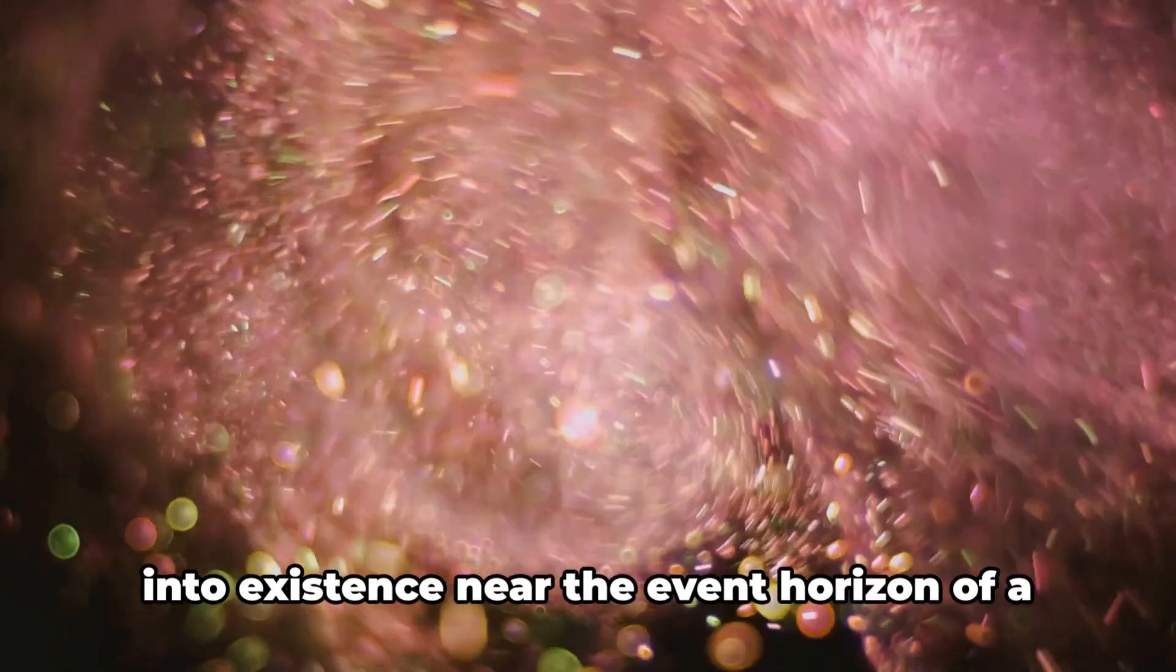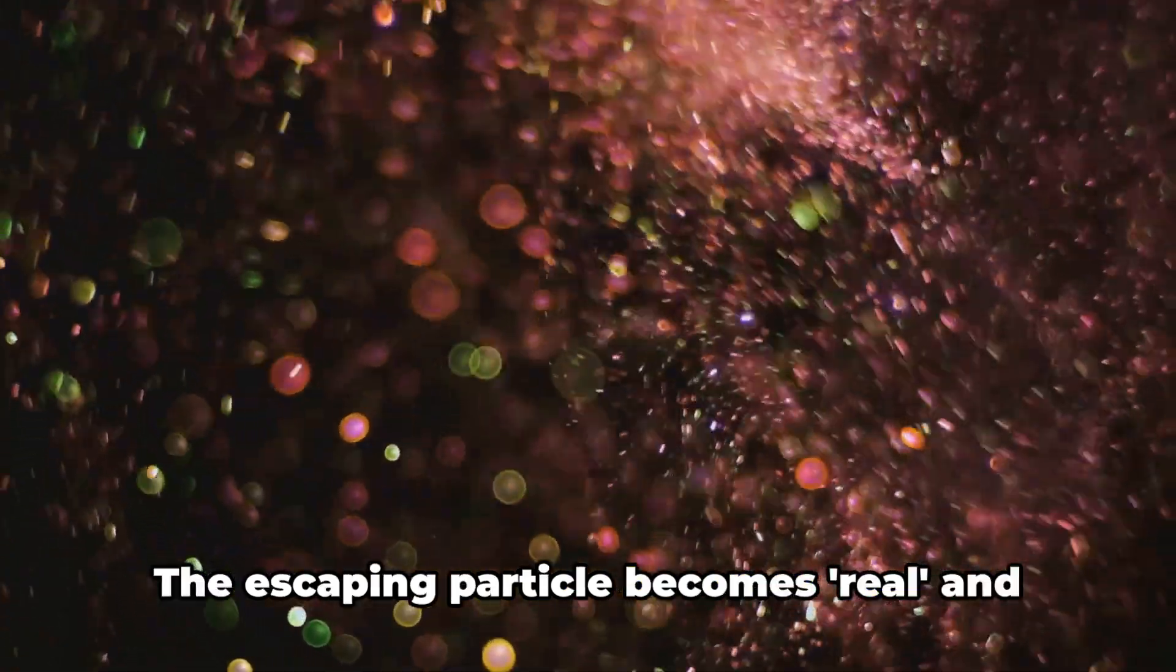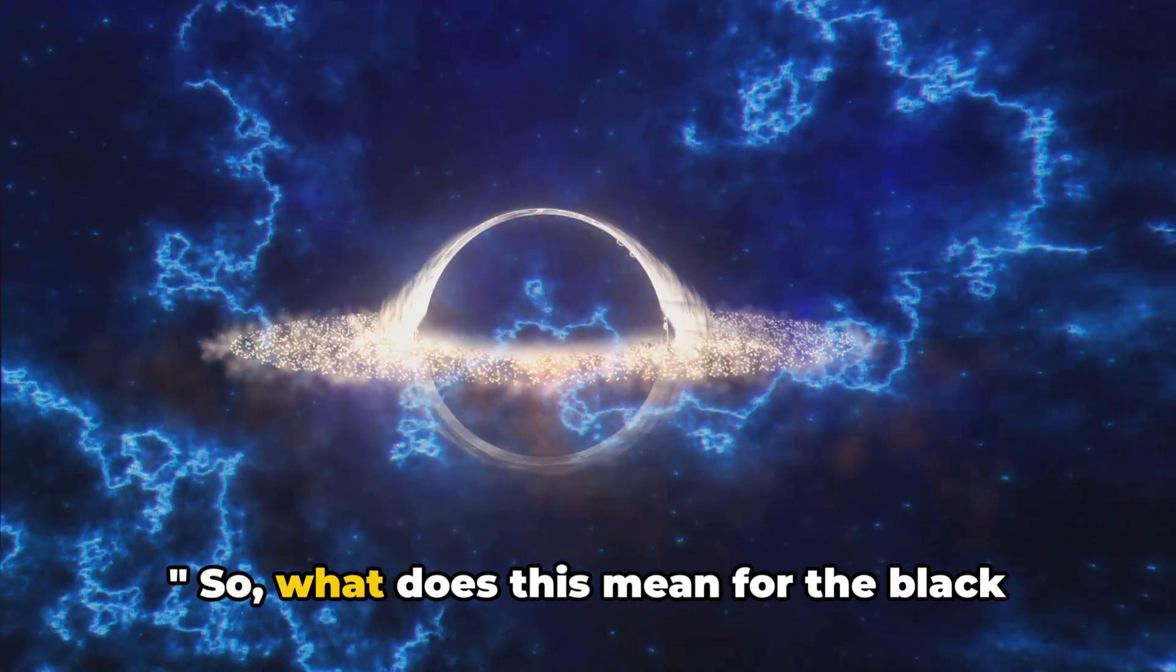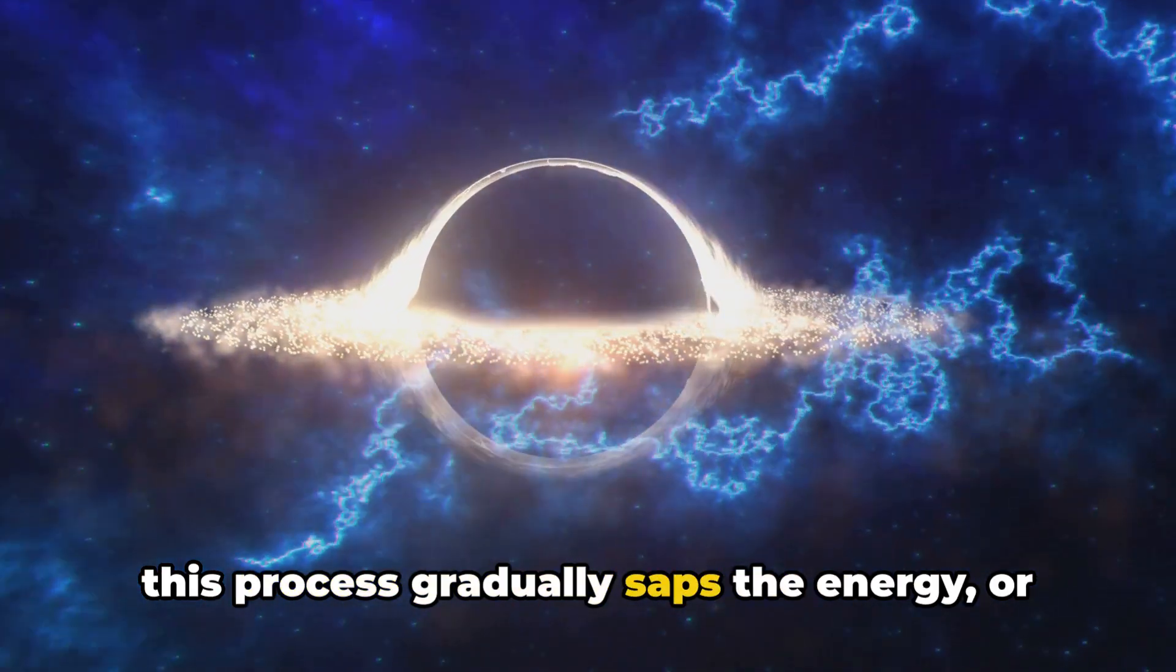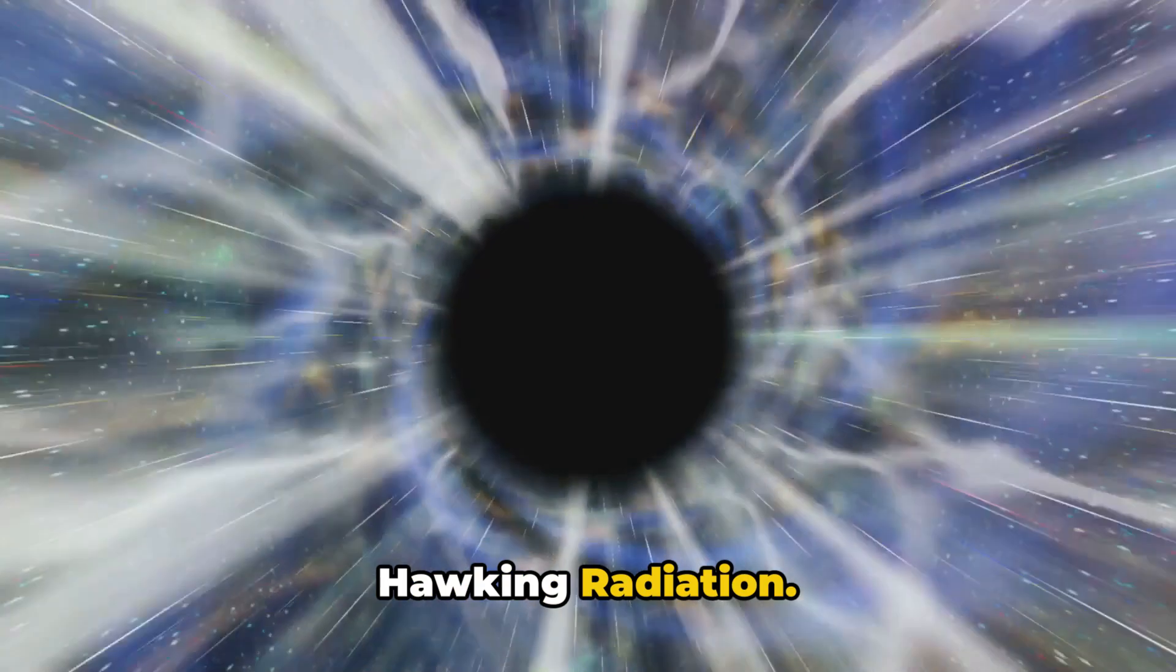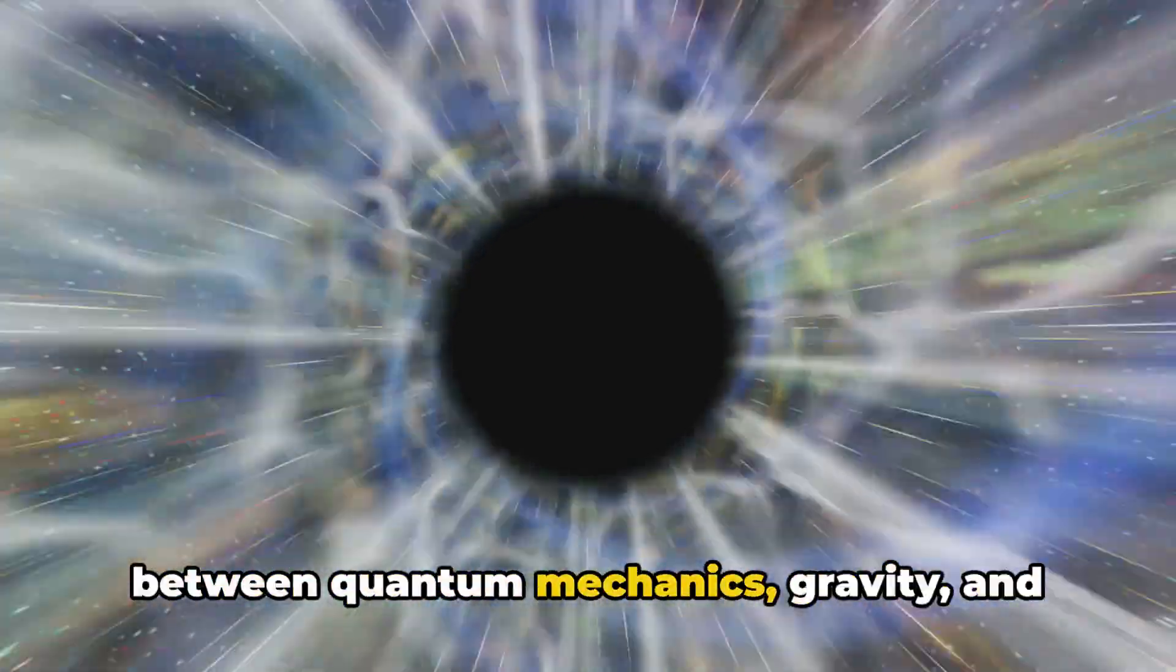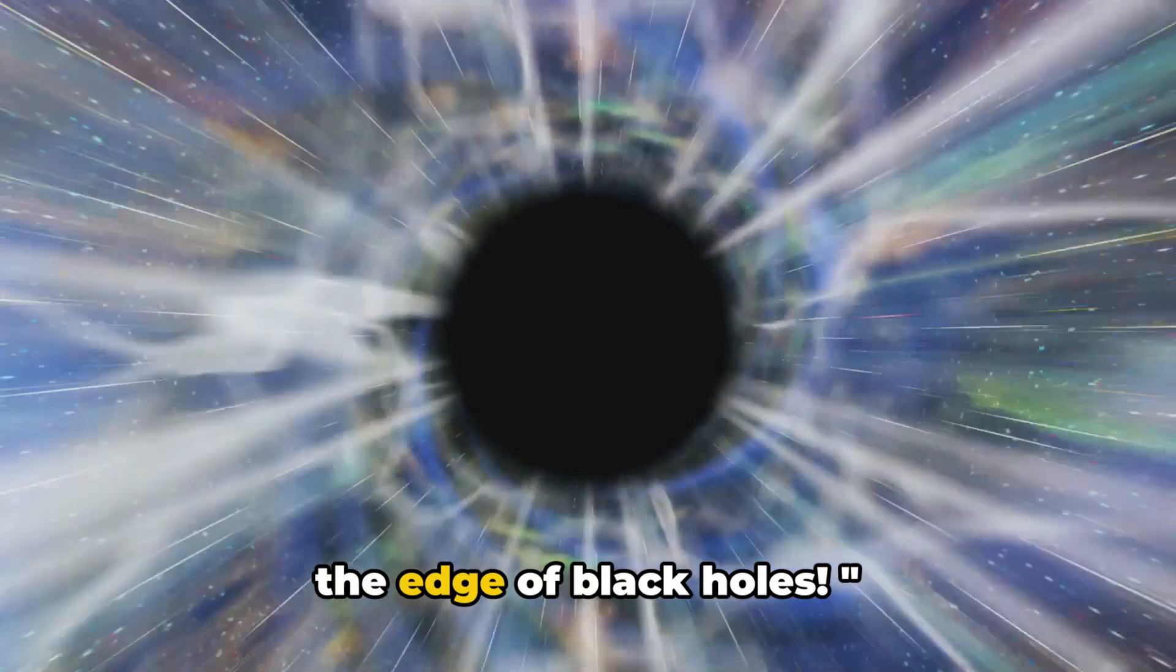Now, if a pair of such particles comes into existence near the event horizon of a black hole, one may fall into the black hole while the other escapes. The escaping particle becomes real, and the energy needed for this process is borrowed from the black hole itself. So, what does this mean for the black hole? Well, the intriguing part is that this process gradually saps the energy or mass from the black hole. This leads to the idea that black holes could eventually evaporate over unimaginable timescales due to this Hawking radiation. It's a complex concept, but it illustrates the fascinating interplay between quantum mechanics, gravity, and the nature of the universe itself. Hawking radiation, a quantum whisper from the edge of black holes.